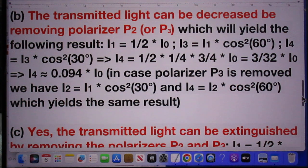The final result that you see here in both cases is that I4 is 0.094 times I₀.